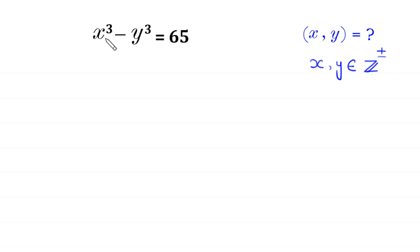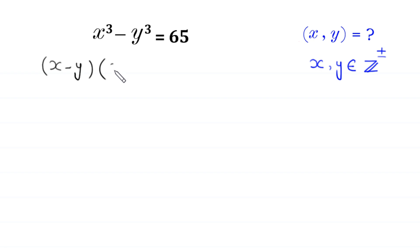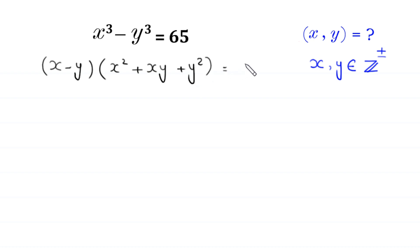This x cubed minus y cubed can be factorized as x minus y, times x squared plus xy plus y squared, is equal to 65.